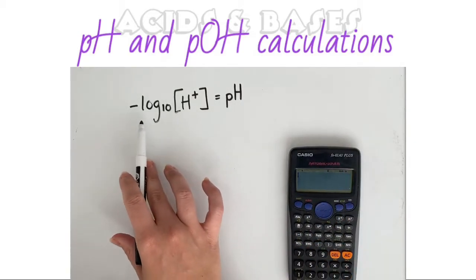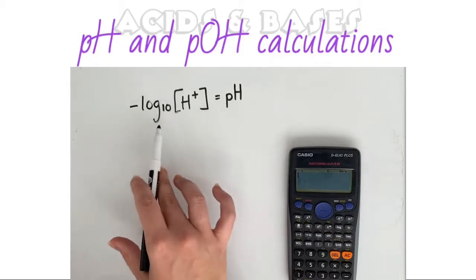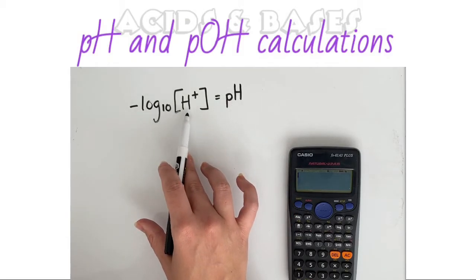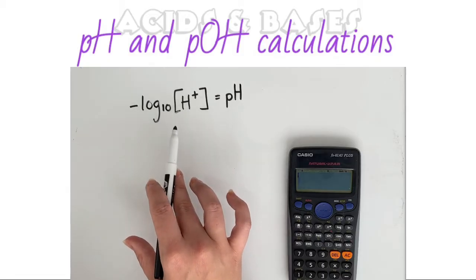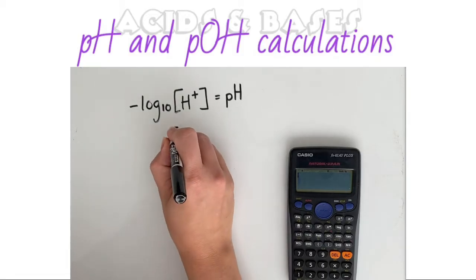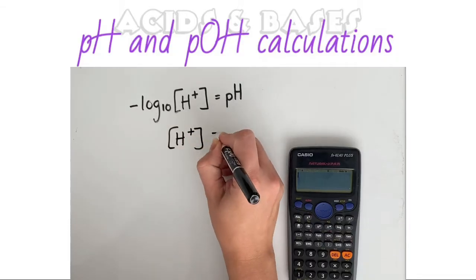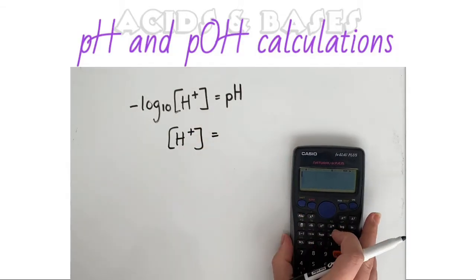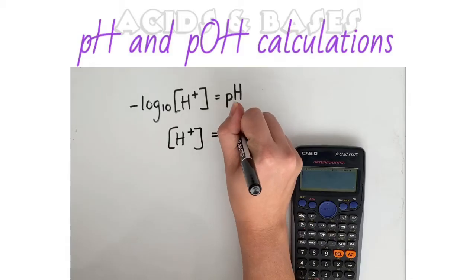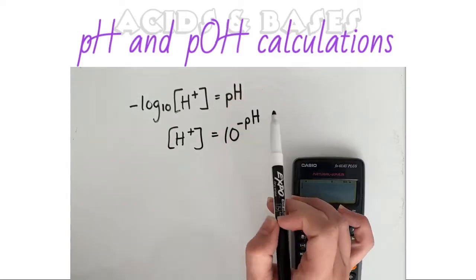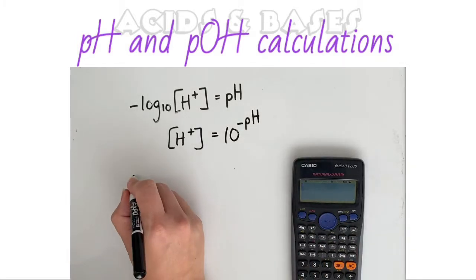So what is the reverse of this, like how do we get from here to work out the concentration? And the answer to that is that the concentration is equal to 10 to the power of the negative pH value.